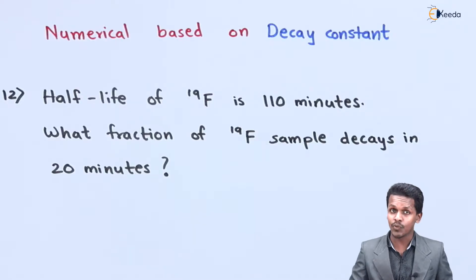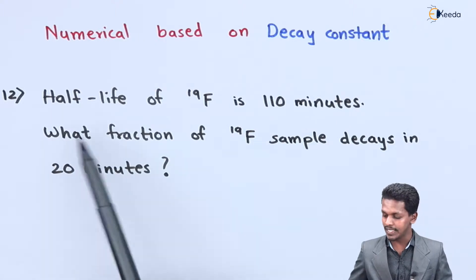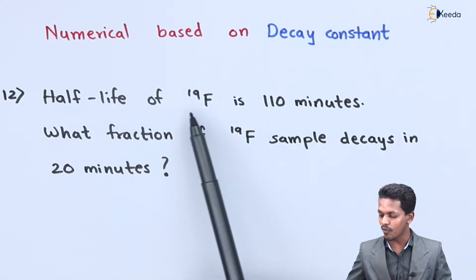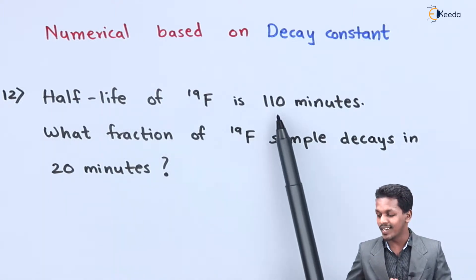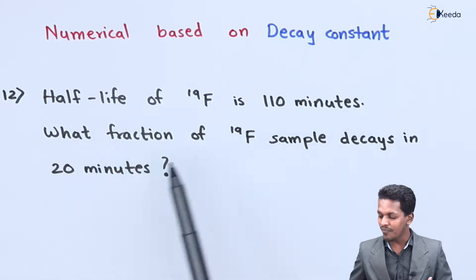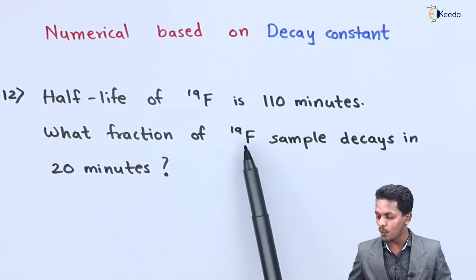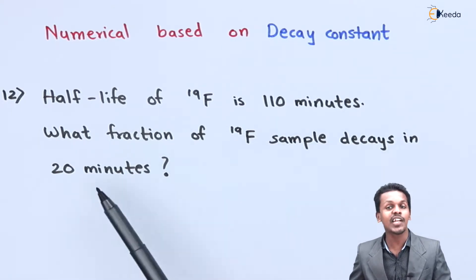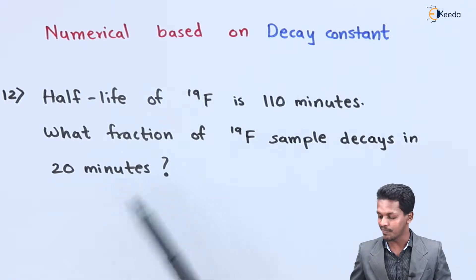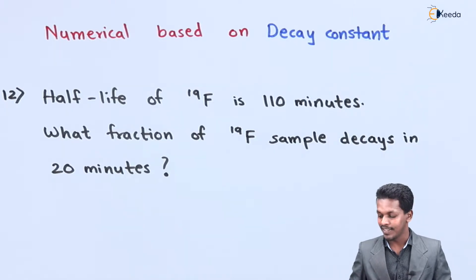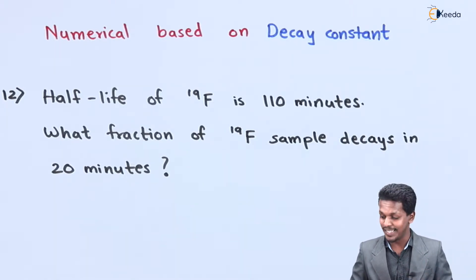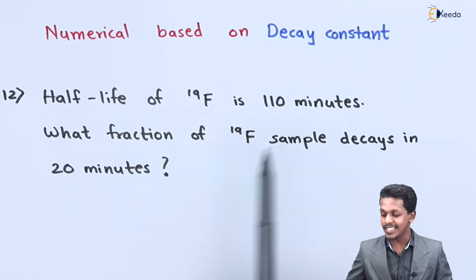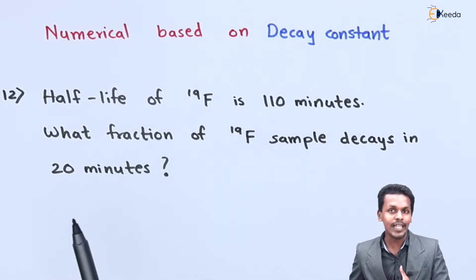The question is: the half-life of Fluorine-19 is 110 minutes. What fraction of a Fluorine-19 sample decays in 20 minutes? This question is quite different from the previous one, so let's see how we can solve it. First, let us find out the given data.